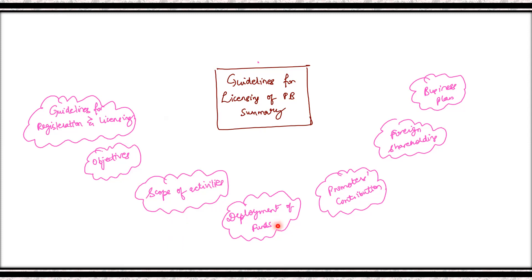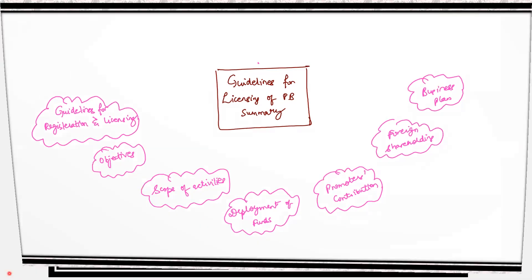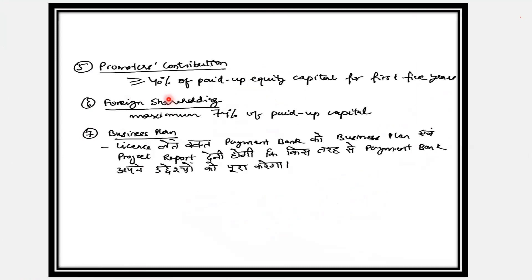Deployment of funds — जो पैसे payment bank के पास deposit होते हैं उन्हें lending activities के लिए इस्तेमाल नहीं कर सकता। Government securities खरीदने के लिए use कर सकता है लेकिन demand deposits का 75% या उससे अधिक government securities में invest होना चाहिए। दूसरे commercial banks के पास भी funds रख सकता है लेकिन 25% से ज़्यादा नहीं। Promoters contribution — promoters की contribution paid-up equity share capital में 40% या उससे अधिक होनी चाहिए और 5 साल तक बढ़ सकती है, कम नहीं हो सकती।